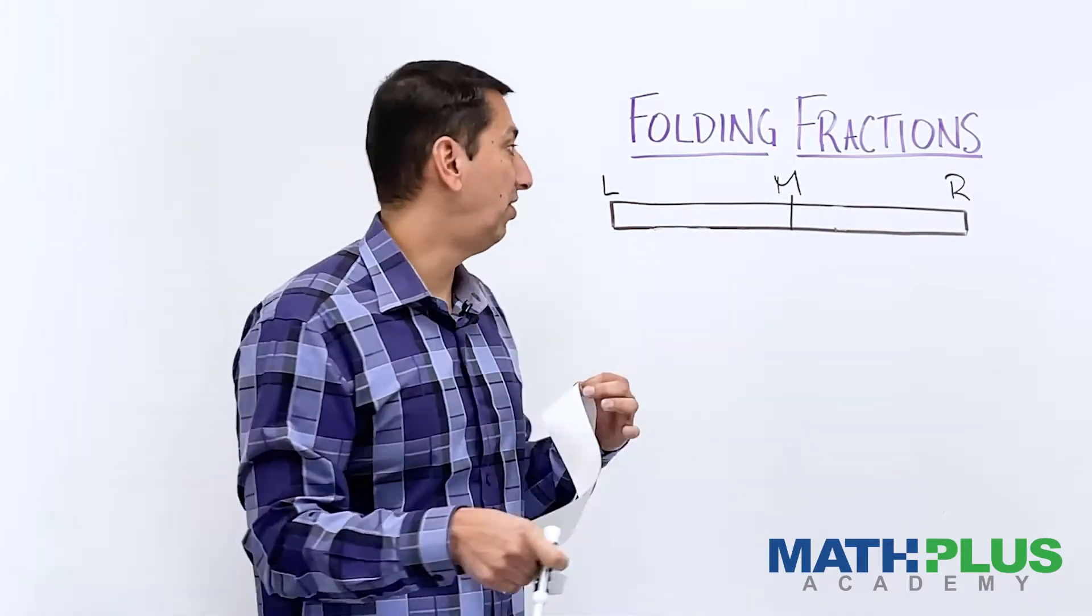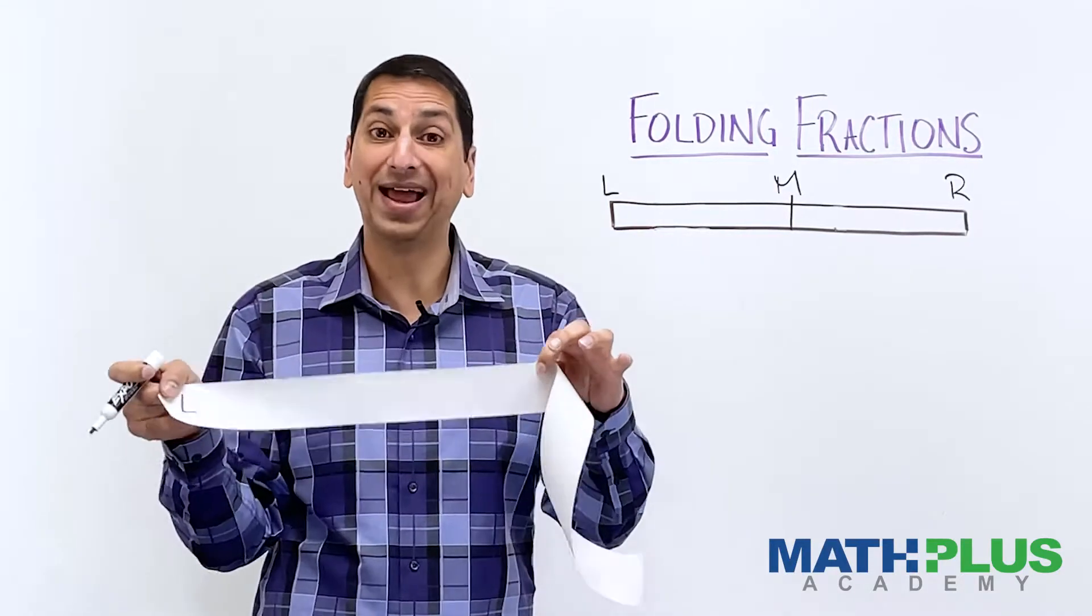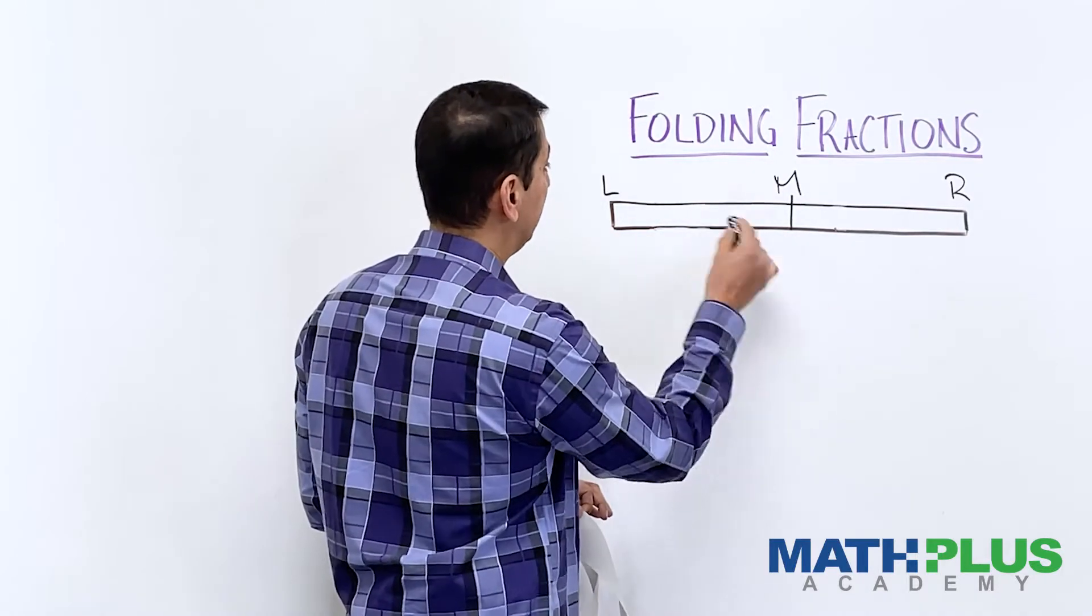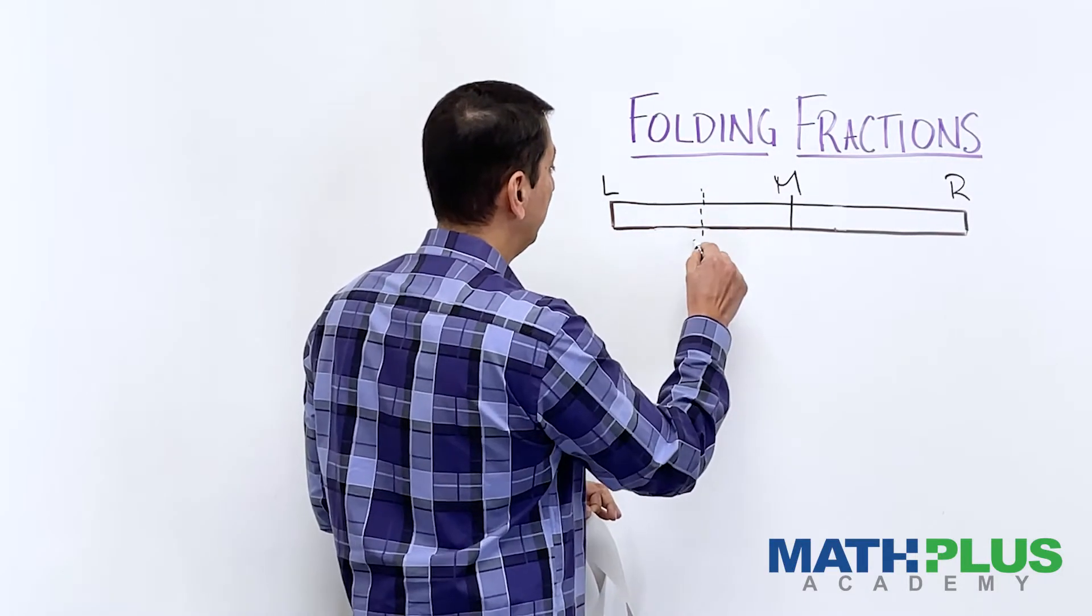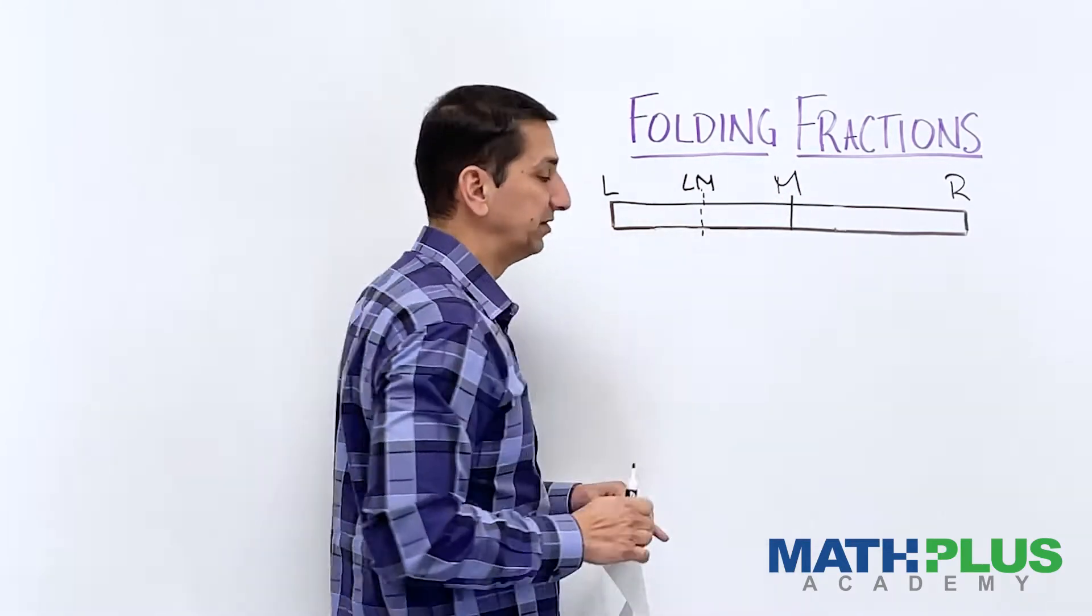So I am going to call that crease that I just made, folding L over to M, I'm going to call that LM. So on my thing here, I folded this over to here. I made a new crease. We're going to call this LM because left was folded over to the middle.